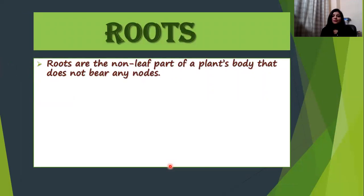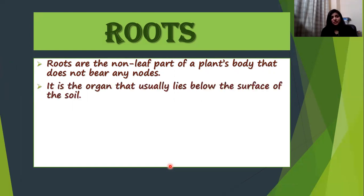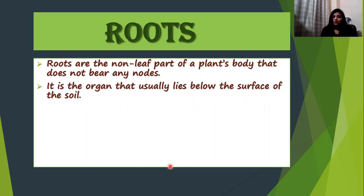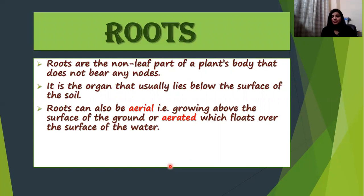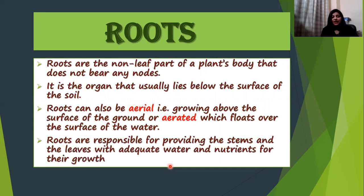Roots are the part of the plant that don't bear any node, unlike the stem which has nodes and internodes. Roots lie usually below the surface of the ground, though as discussed, certain roots lie above the ground — these can be aerated or aerial roots. Their main role is to help the plant transport water and minerals from the ground to other parts of the plant via the stem or to the leaves.